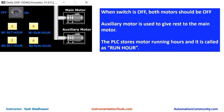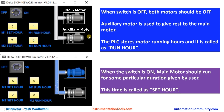Let us understand its user definition. First of all, if the main switch is off then both motors should remain off. Here I have created one HMI screen through which the user can enter set hours for motors — that is, for what duration the main and auxiliary motors will run — and it will display the running hour of the motor which will be stored through PLC. Now if the system is on, the main motor will turn on and remain on until the running hours of the main motor become equal to set hours.